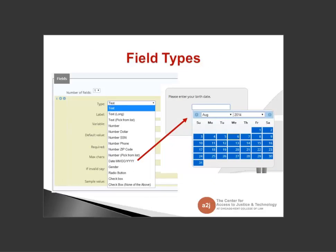Fields are the format of the answer an end user provides. There are six basic types: text, number, date, gender, radio buttons, and checkboxes. Field types and variable types are not the same — variable types determine how the data should be treated. For example, a phone number is field type number, but it's a variable type text because you won't do any computations with it. In HotDocs, that variable would be set as a text variable, and also in A2J Author 5.0, even though the field type is number. They don't have to match.